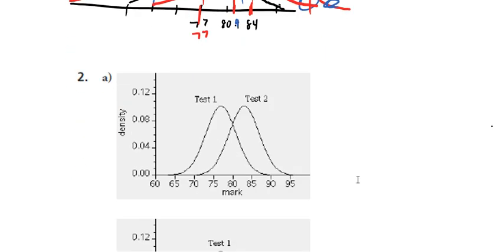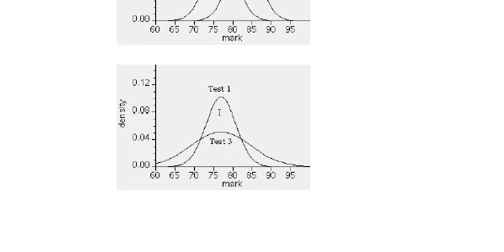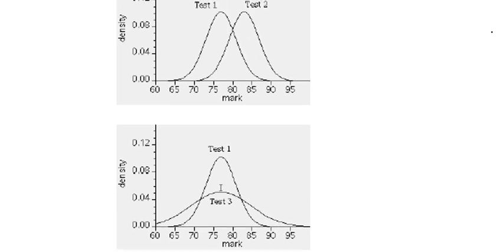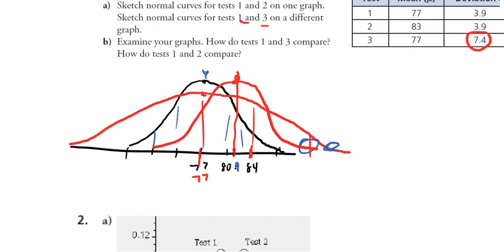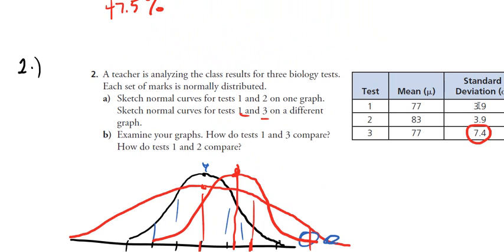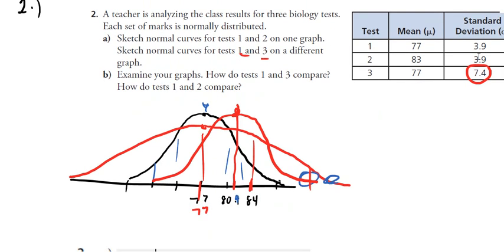So from the answer key, this is what it looks like here. So there's test one and three, right? So it's a little bit flatter and more spread out because the standard deviation is higher. So it's more spread out. So it would bring that down as well because all of the data has to be underneath the curve. And then for test one and two, as I just mentioned, the averages are different, but they're the same, the exact same shape because really the standard deviation dictates the shape of that curve.